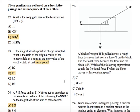76. A block of weight W is pulled across a rough floor by a rope that exerts a force T on the block. The frictional force between the floor and the block is F. Which of the following expressions equals the frictional force F when the block moves with a constant speed? When a block moves with constant speed, that tells you that the acceleration is zero.